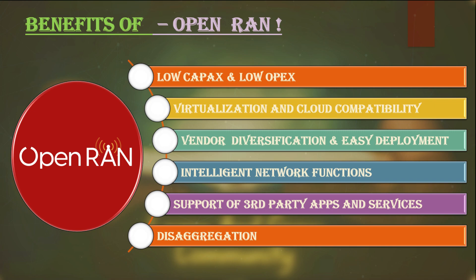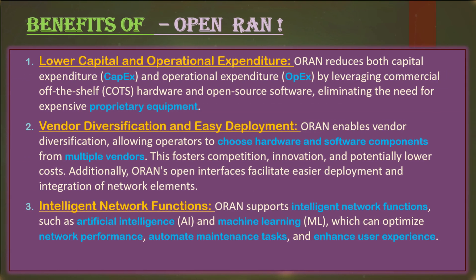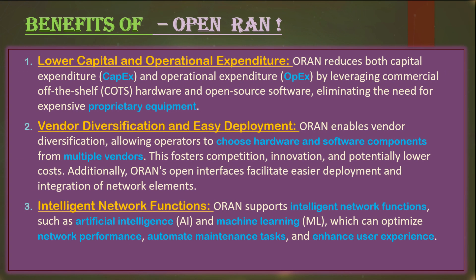We are also expecting significant reduction in operational expenditure. The O-RAN ecosystem has the goal to develop more and more automation to optimize the network, with new feature and function development. This will also help deploy services faster.